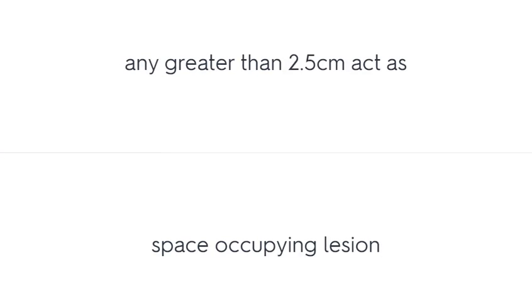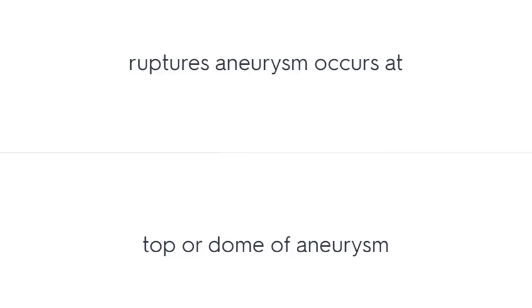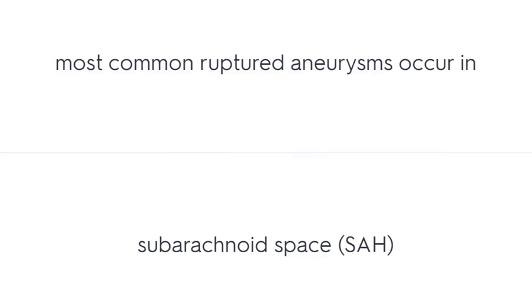Any aneurysm greater than 2.5 cm acts as a space-occupying lesion. Ruptured aneurysms are unpreventable and unpredictable. Rupture occurs at the top or dome of the aneurysm. With a ruptured aneurysm, there is a sudden release of blood that immediately seals off. Most commonly, ruptured aneurysms occur in the subarachnoid space.